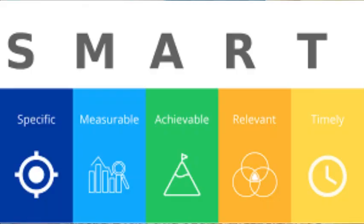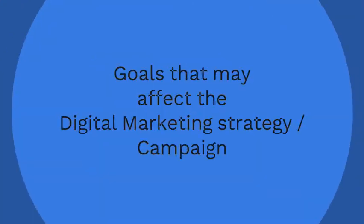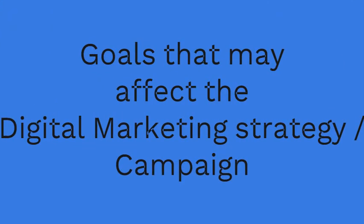The objective you decide for any digital marketing activity should be SMART — we have studied this earlier also. SMART means Specific, Measurable, Attainable, Relevant, and Time-bound. Now there are six common goals which will help you strategize your digital marketing activity.